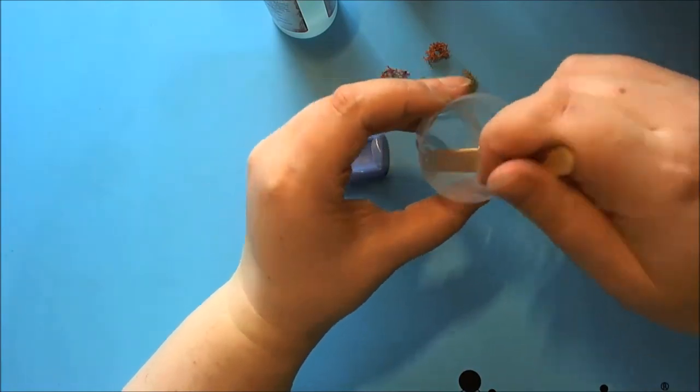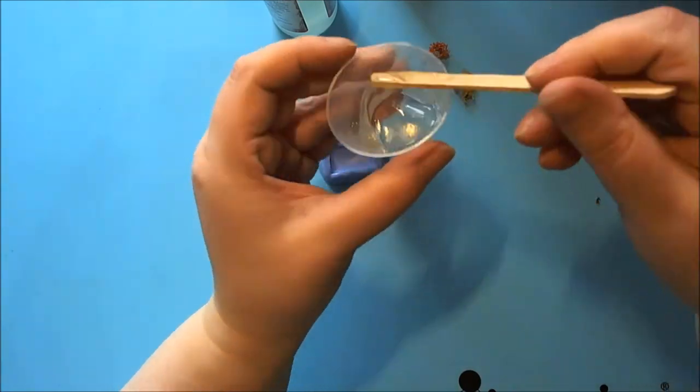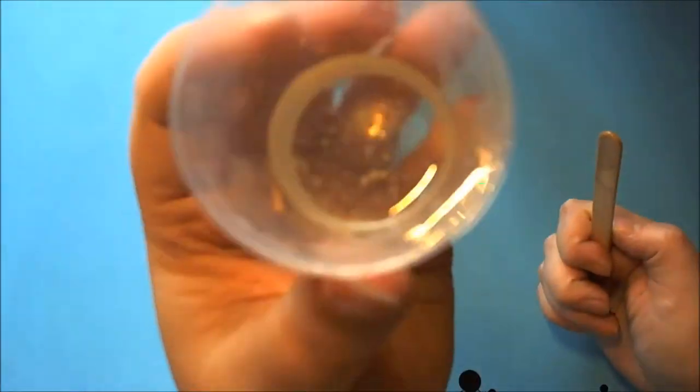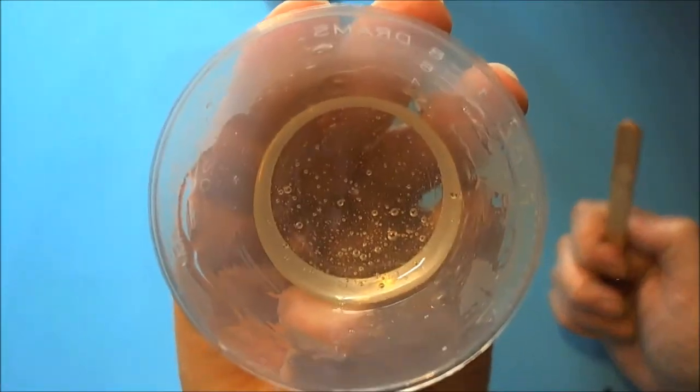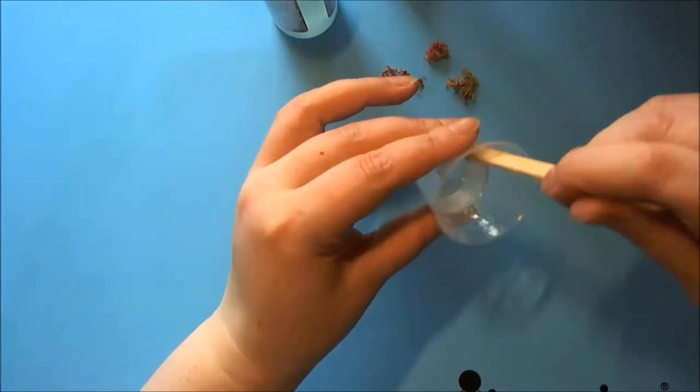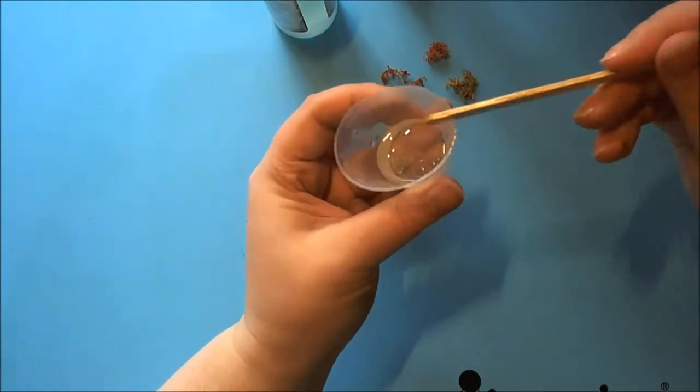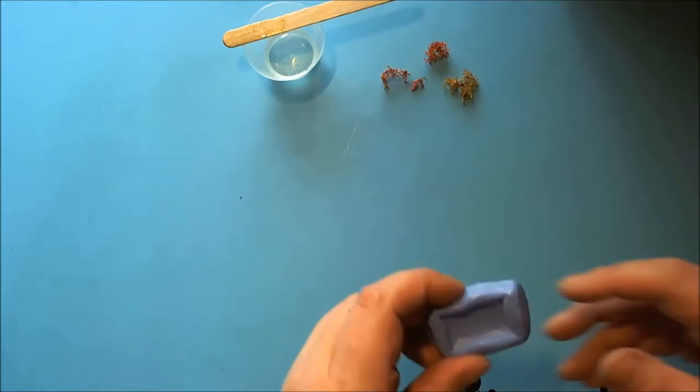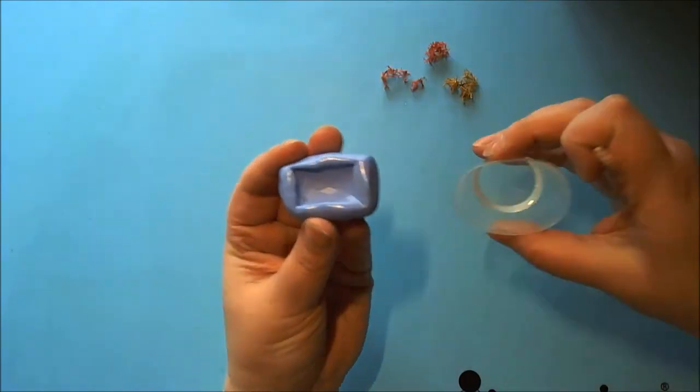After mixing thoroughly and making sure that all of the resin has come away from the edge and on the stick I'm going to set it aside and leave it for about five minutes. I mixed it for a total of about two to three minutes to make sure it was mixed properly. Leaving it for five minutes helps the bubbles rise and you won't be pouring them into your mould where they could get trapped.